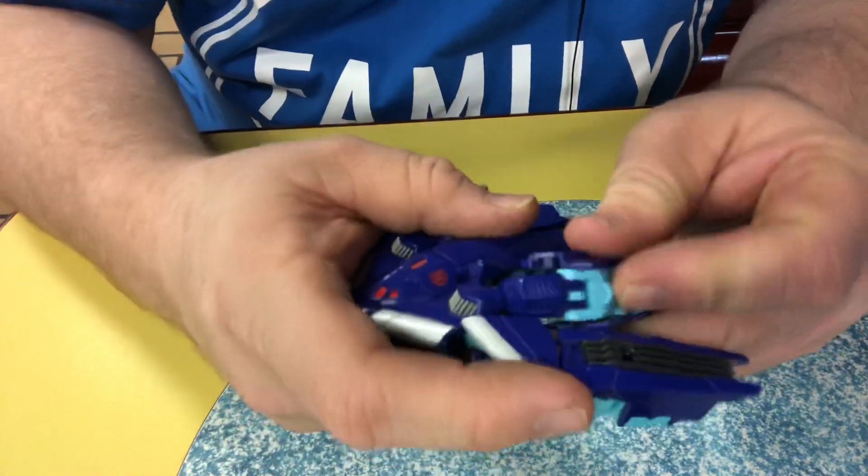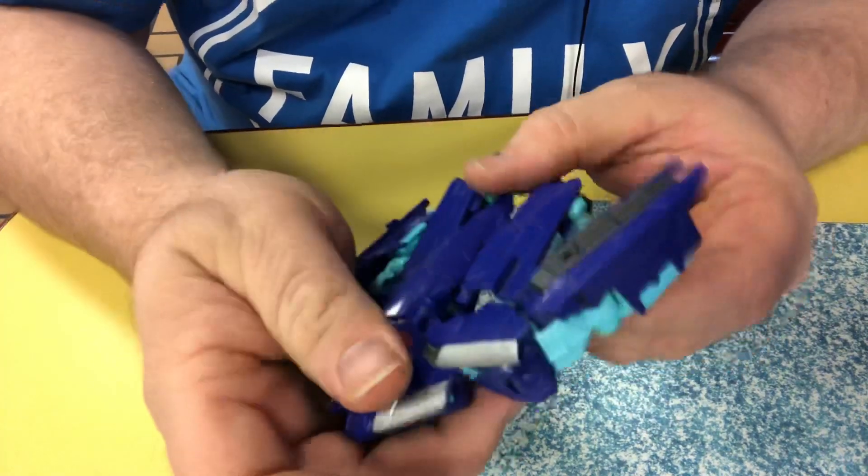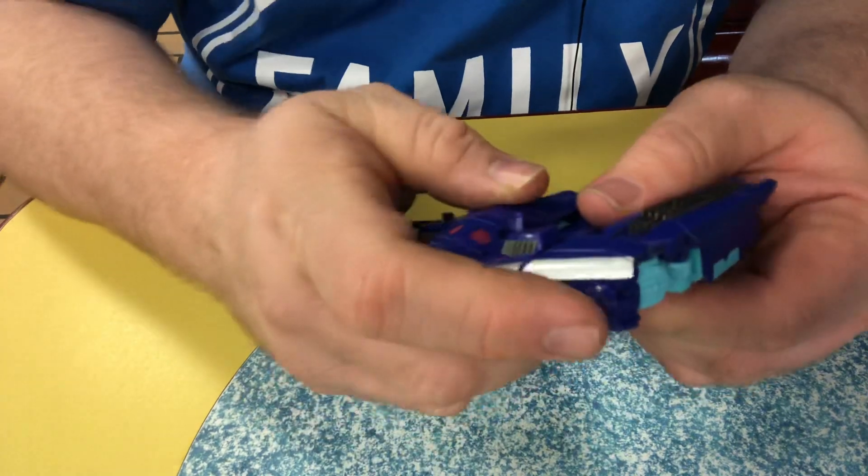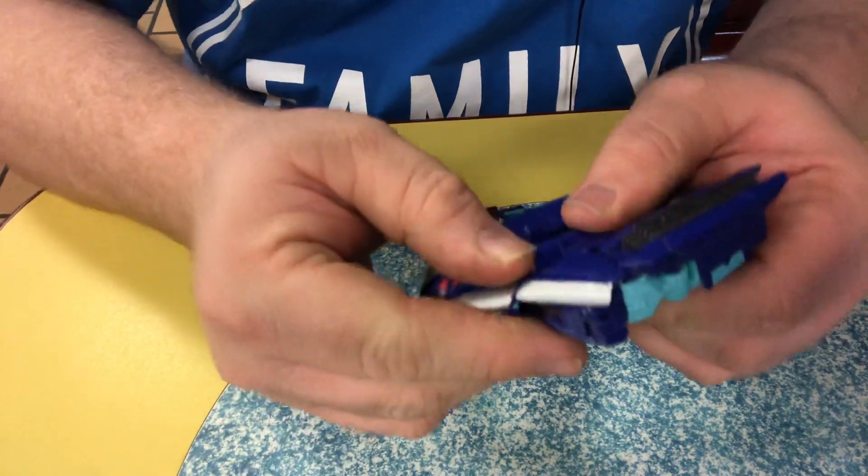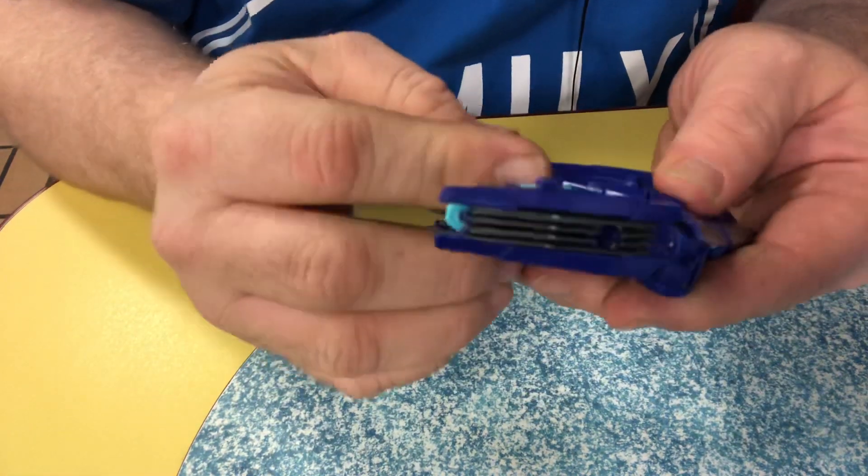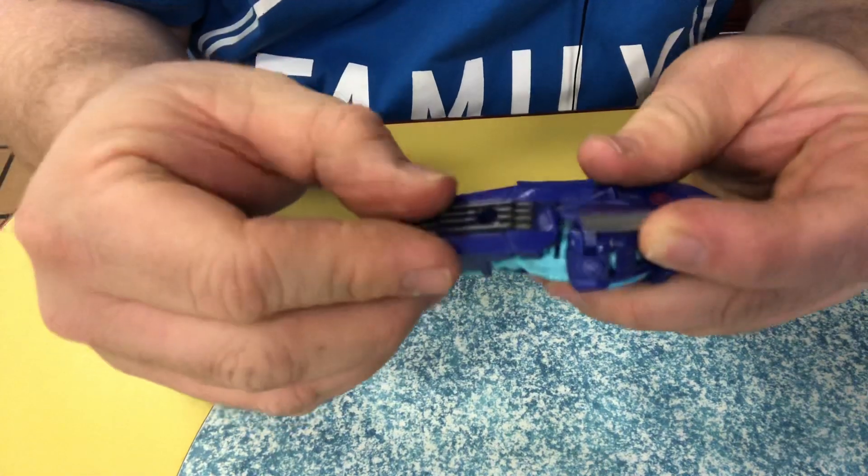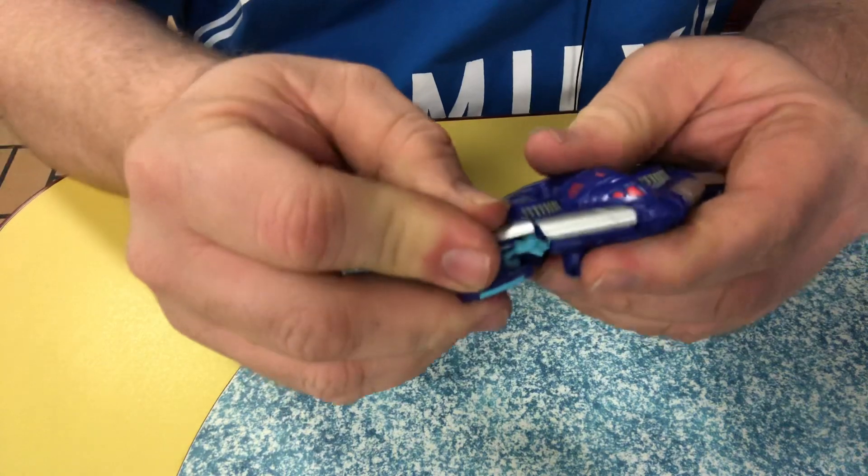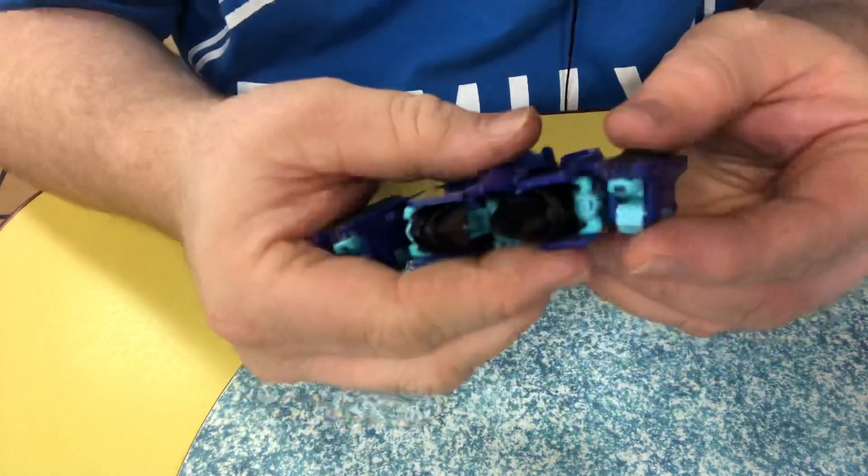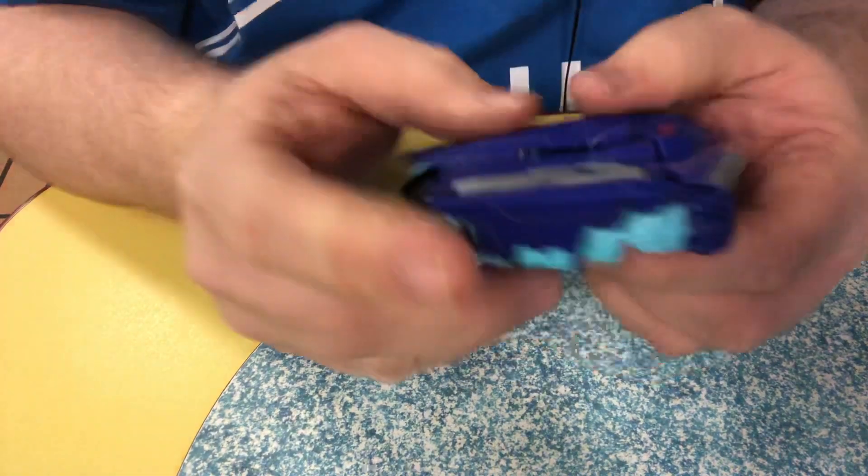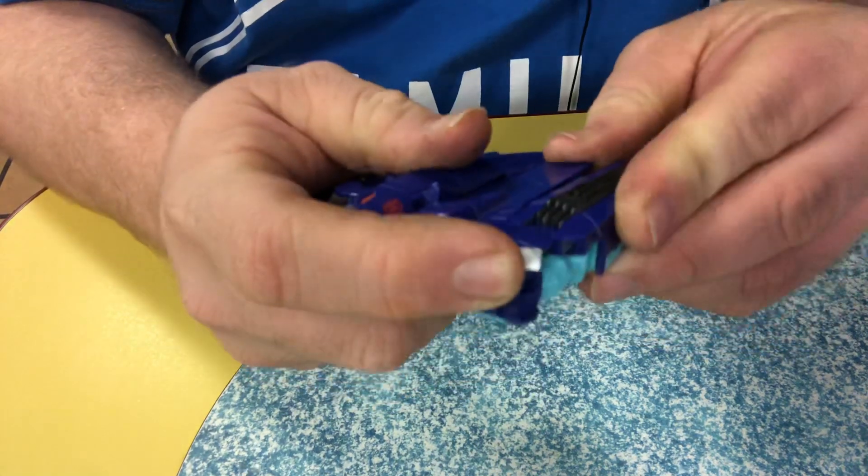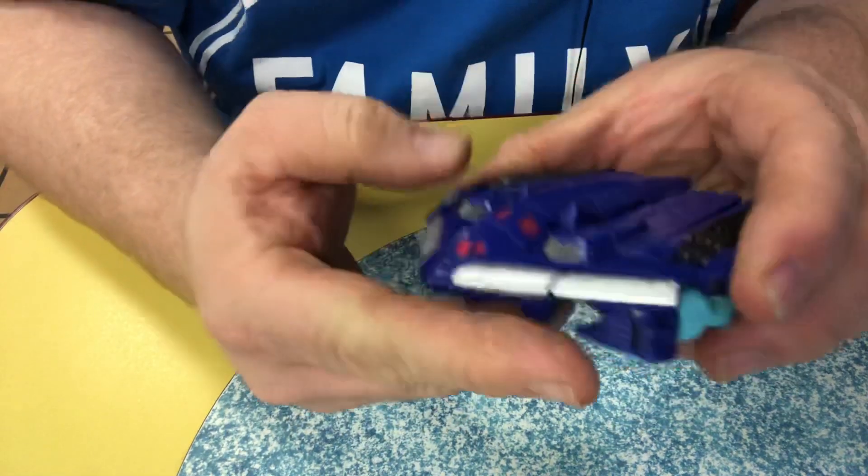I'll do it like that, it'll be much easier. There we go, like that. Now it just pegs right in. There's a peg right there, there's a peg on both sides. It's a little tricky.